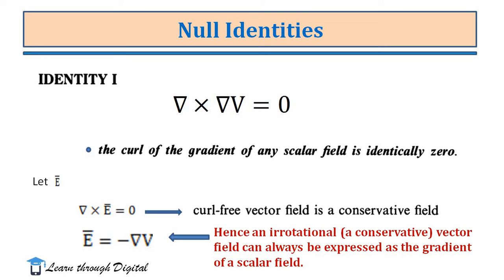These two null identities are: the first one is del cross del V is equal to 0. That is, the curl of the gradient of any scalar field is identically 0. For example, we consider E-vector as the Electric Field Intensity. The curl of E-vector is 0, which means it is a curl-free vector — a conservative field. We know that electric field lines are streamlines; there is no rotational property in the electric field. It is radially outward from the source.